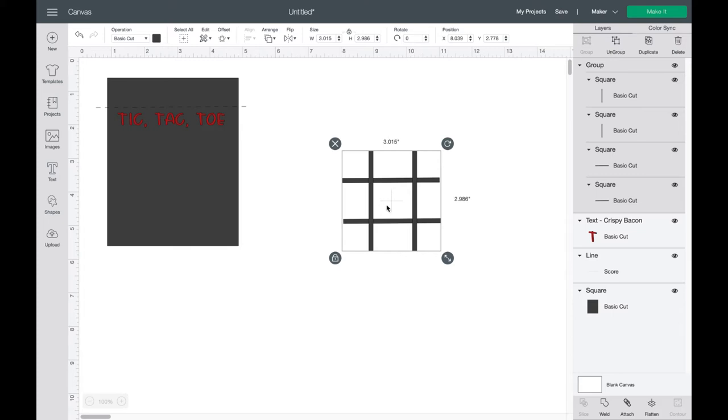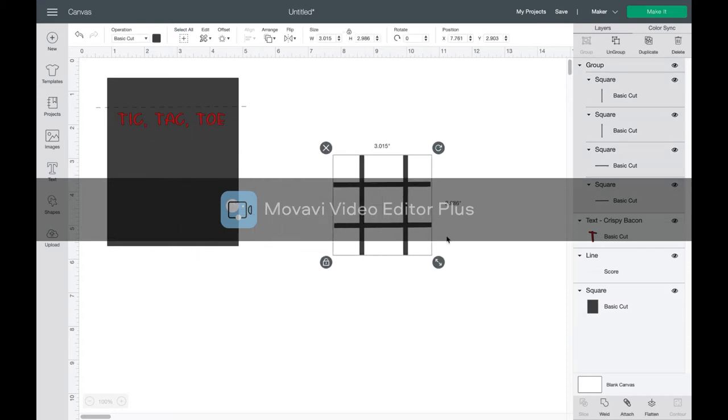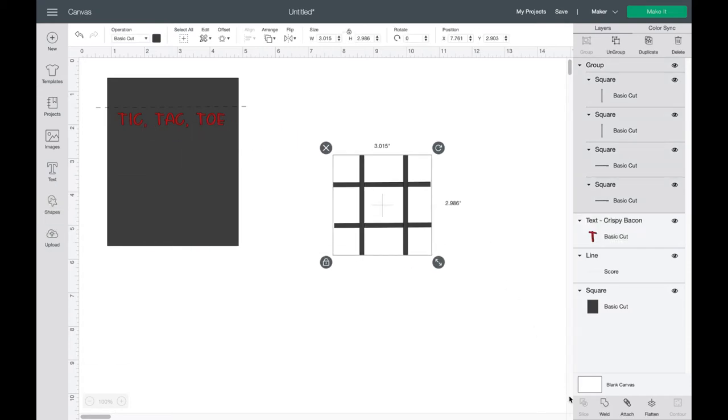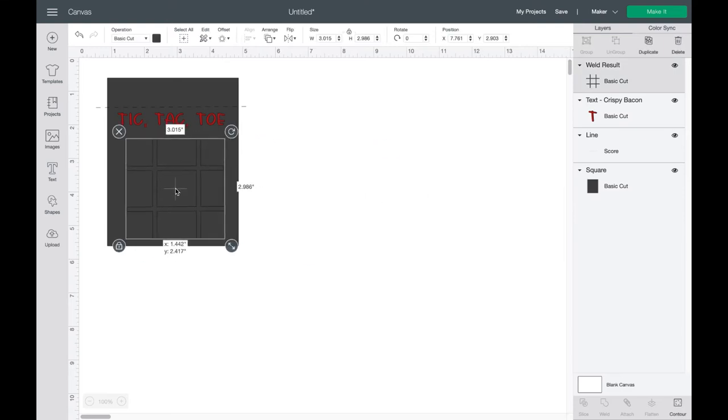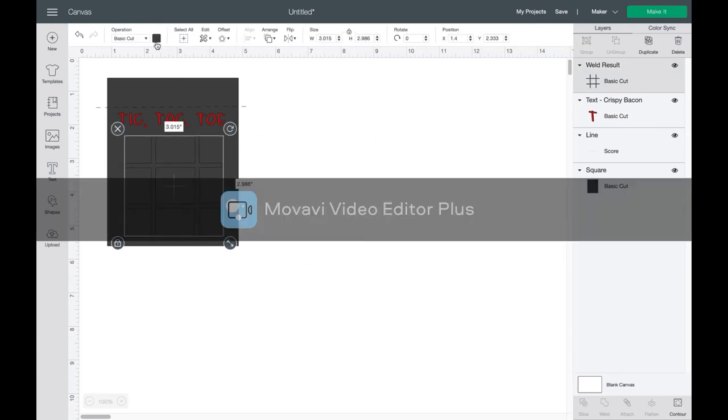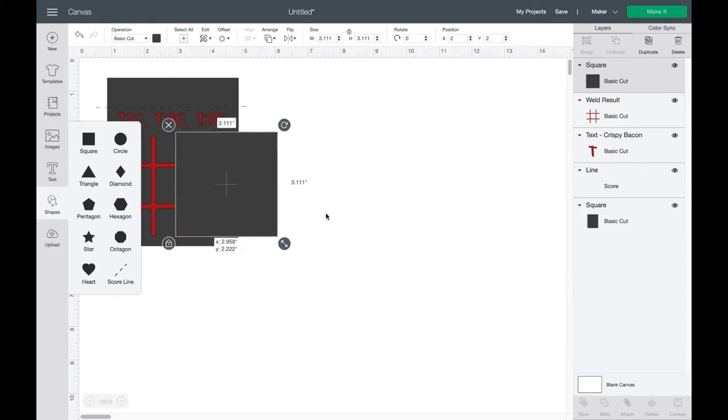All right, so once I got the lines the way I wanted them to be, I highlighted all four of them and I grouped them. And then I wanted to make sure how they look on the template. And then I went and welded them together so you didn't see any of the heat transfer linking it up together, so it just looks seamless. So after I did that I went ahead and just highlighted it so I could see it better on the template, and then I started to work on the X's and O's.